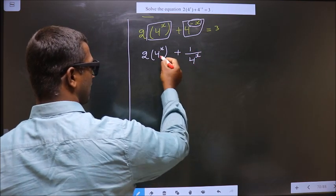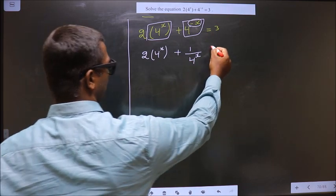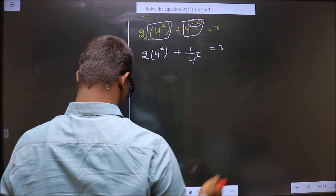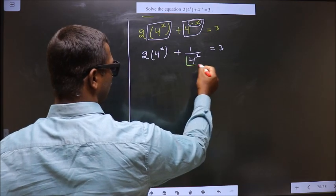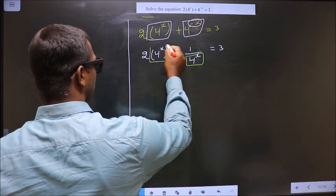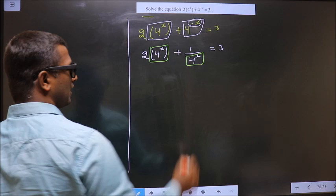Now these two are the same, equal to 3. Clear? To make these two the same, I have shifted this to the denominator. Did you understand?